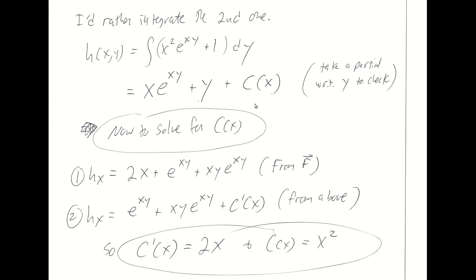So this is an expression for h, but we need to know what c(x) is. Once we have that, we'll have a full expression for h. We solve for c(x) by moving down the other branch of partial derivatives. We started with h sub y, backed out by integration to get h. Now we take the partial of that expression with respect to x to find h sub x. Taking this expression for h and differentiating with respect to x: xe^(xy) yields two terms via the product rule — one involving the chain rule. The derivative of y with respect to x is zero, and the derivative of c(x) with respect to x is just c prime of x.